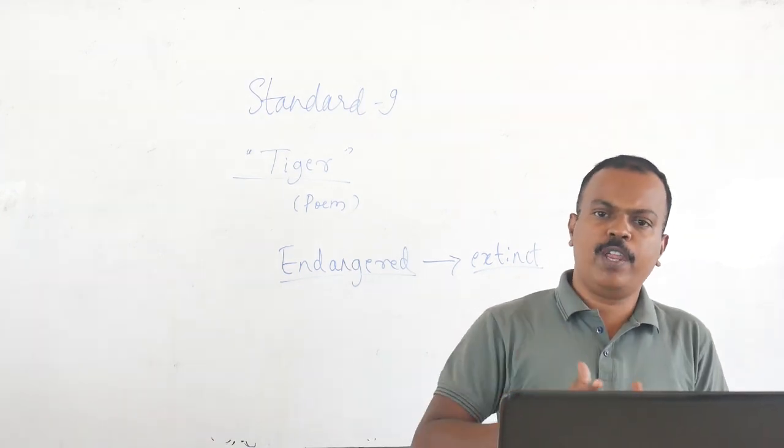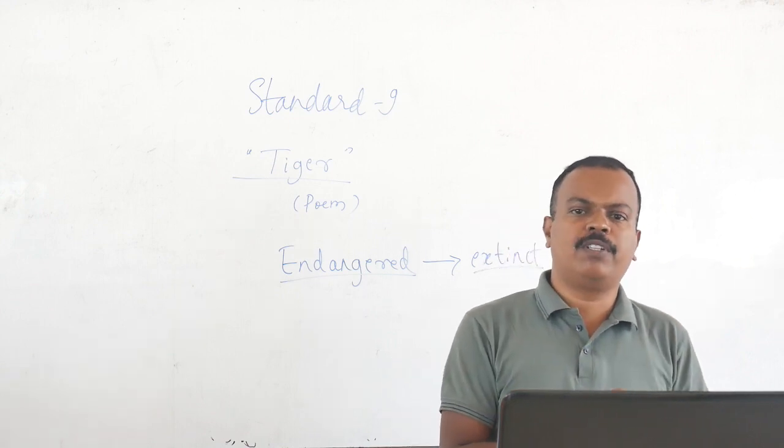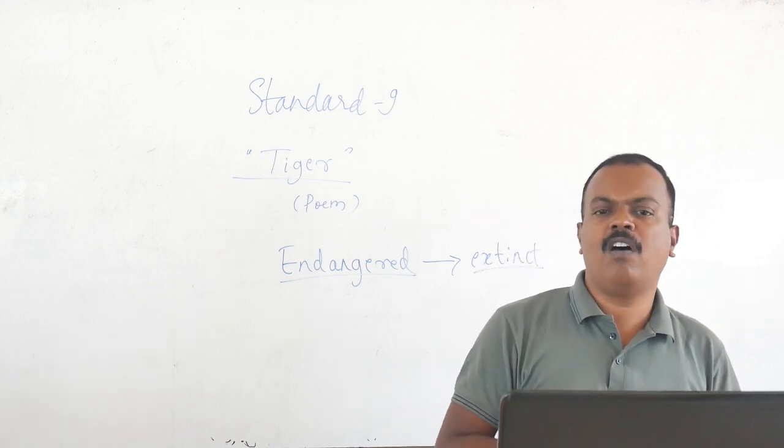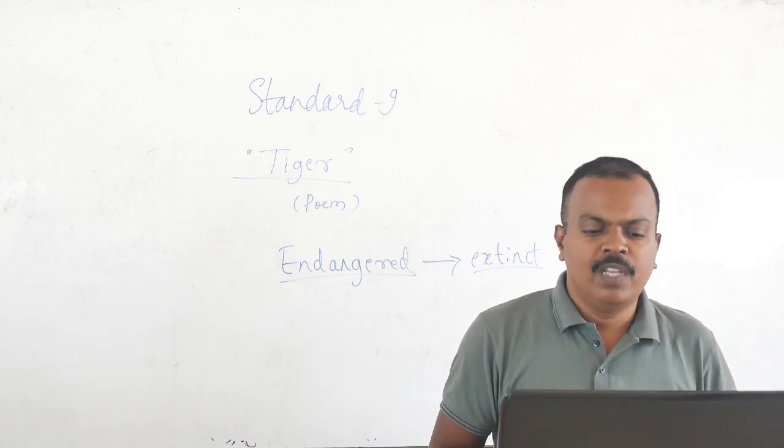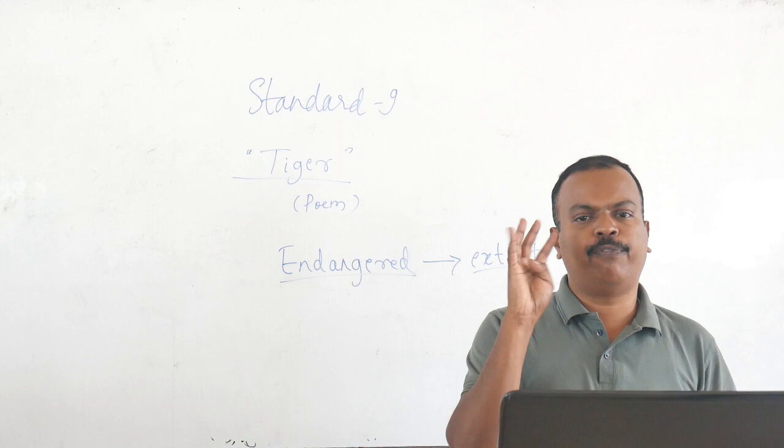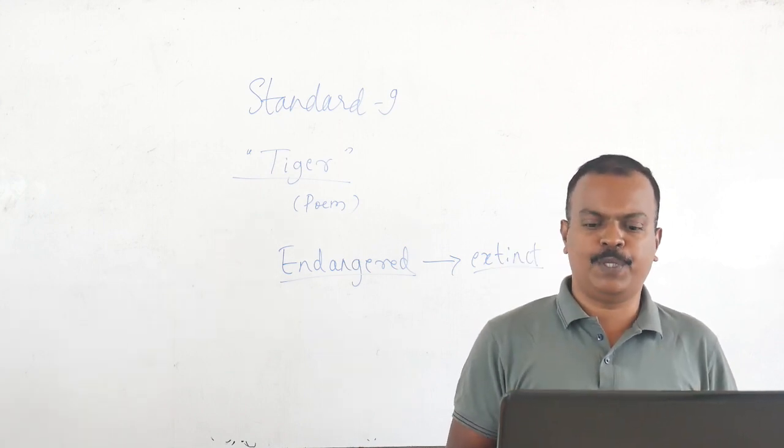So these are the three important reasons why an animal becomes extinct. And today we are talking about tiger and tigers are classified as endangered animals. Today there are only about 4,000 tigers living in the world.